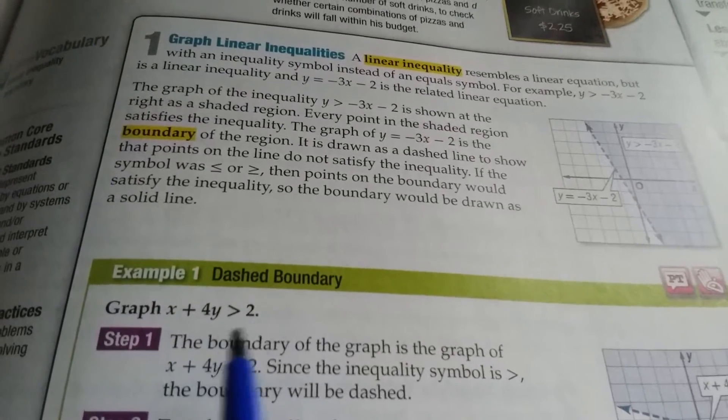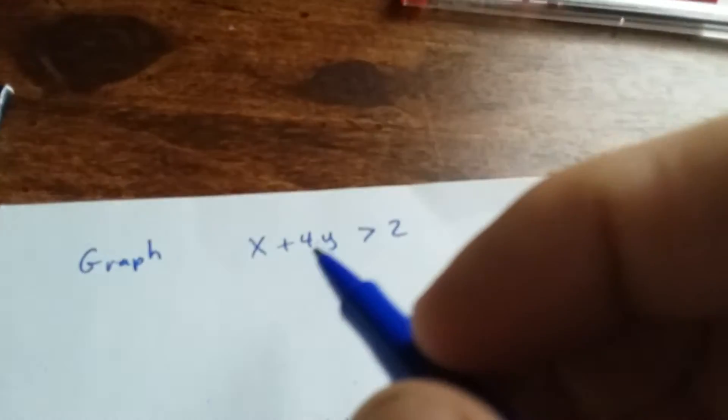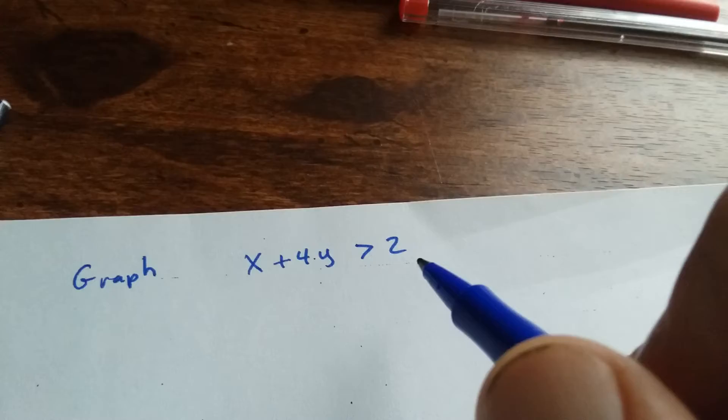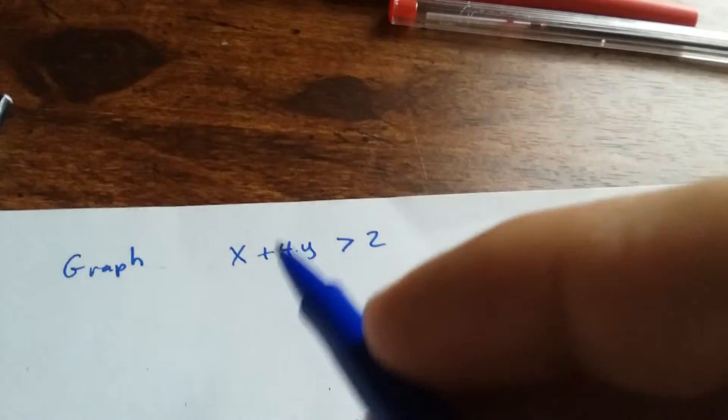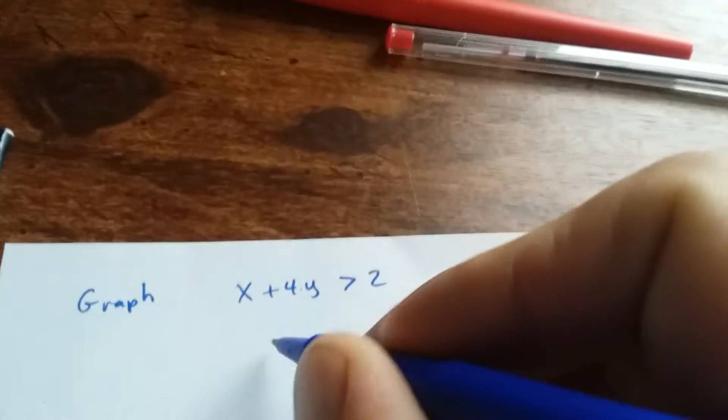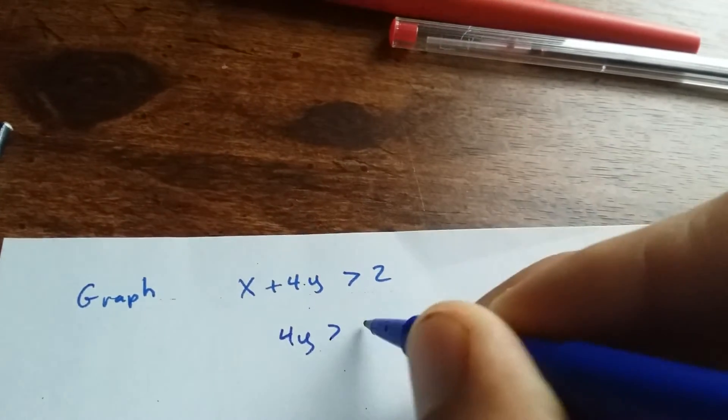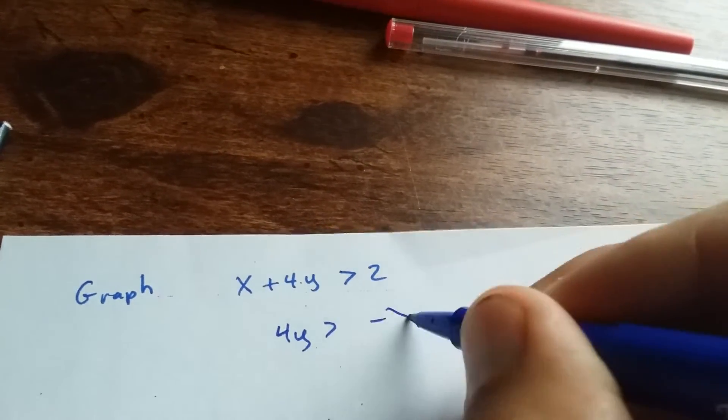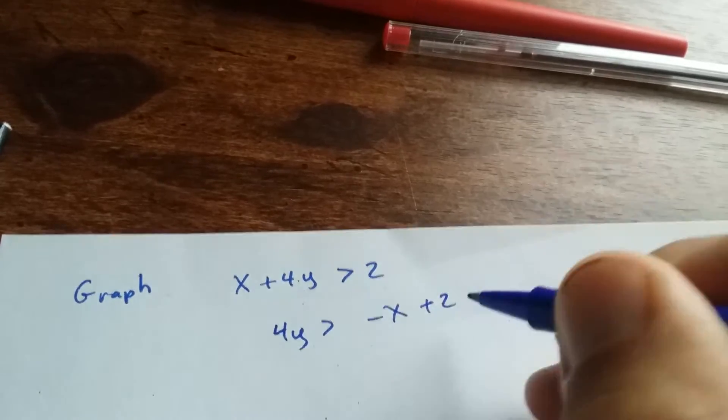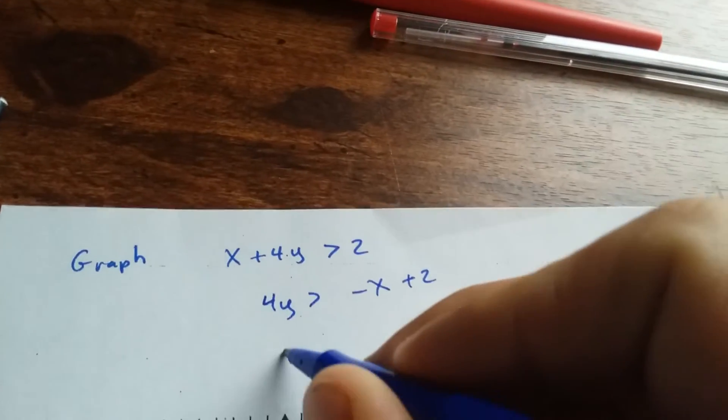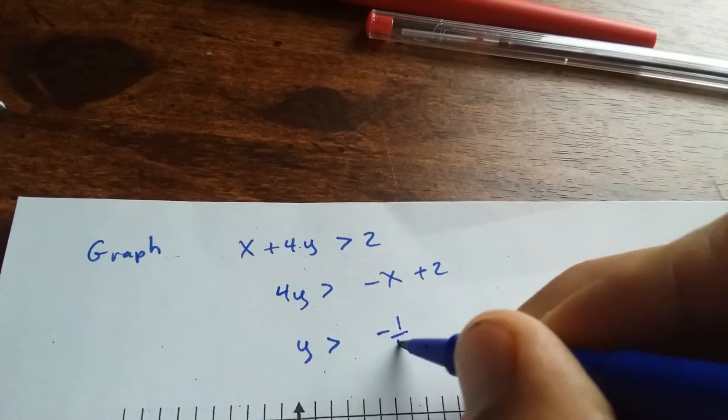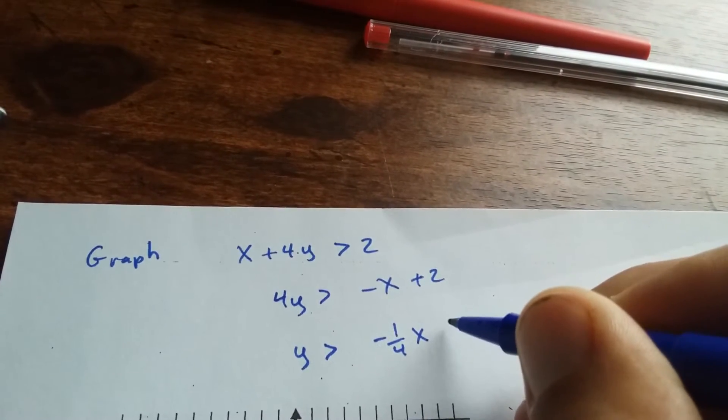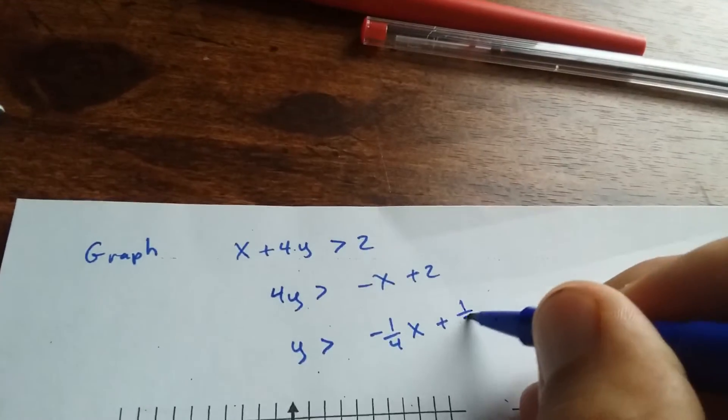Graph x plus 4y greater than 2. Okay, what I like to do, you could find the zeros, or what I like to do is just put it in slope-intercept form. So I'm just going to solve for y. 4y is greater than negative x plus 2. Then I'm going to divide both sides by 4. Y is greater than negative 1/4 x plus 1/2.